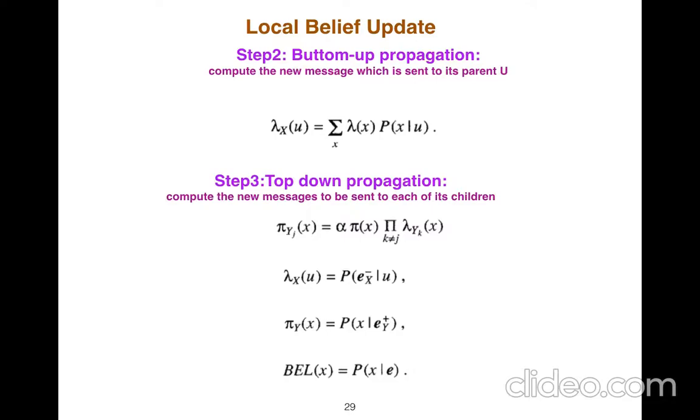In the second step, we have some evidence in bottom of the graph, we update the nodes so that it becomes consistent. In the last step, we do top-down propagation. We have an evidence that's coming from the top of the graph, and we see what happens when we update the rest of the nodes.